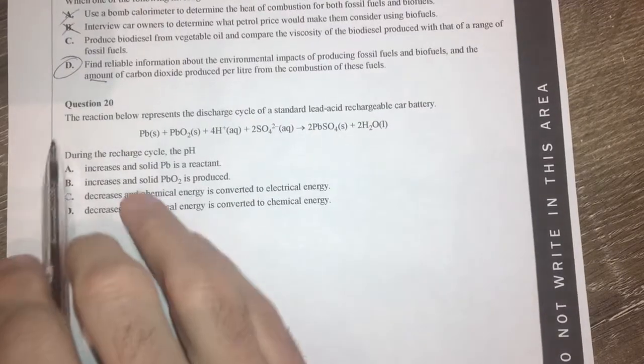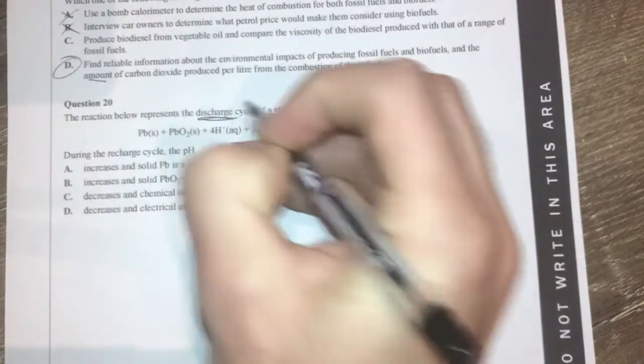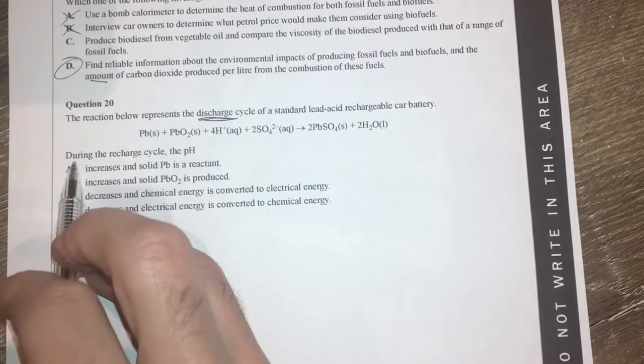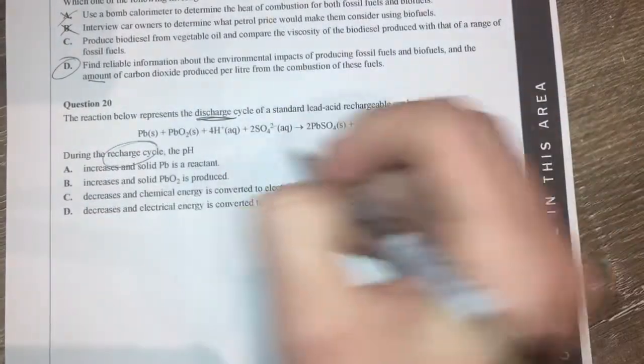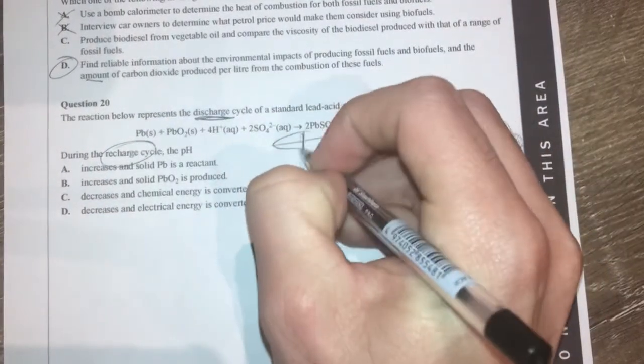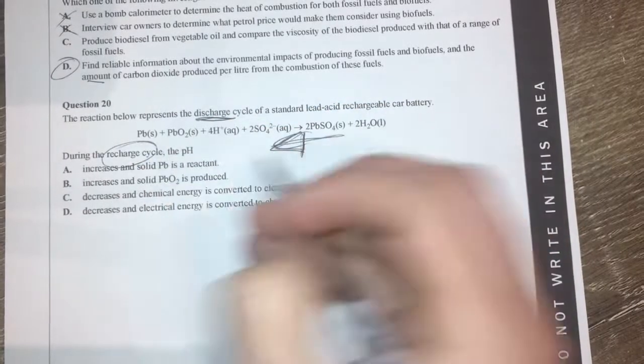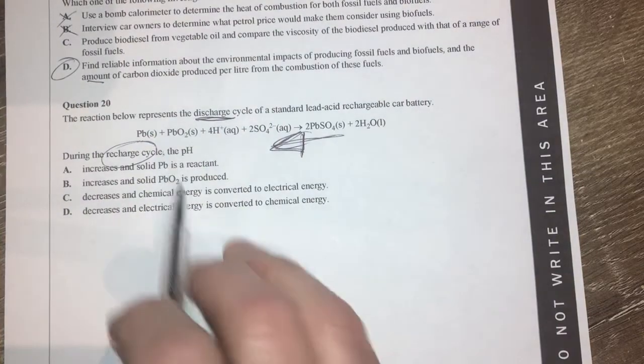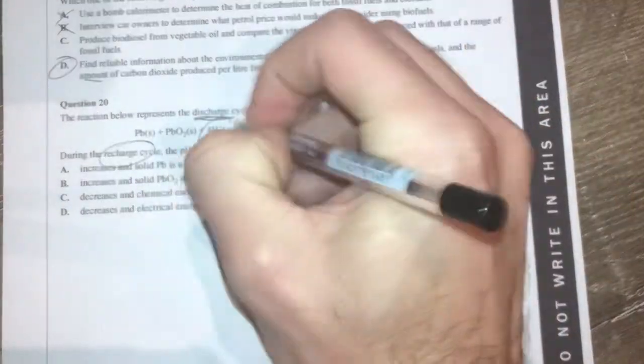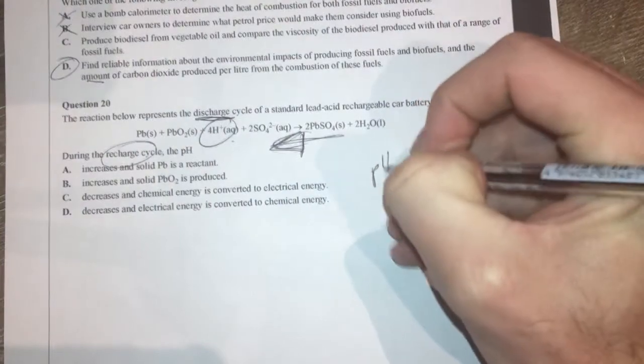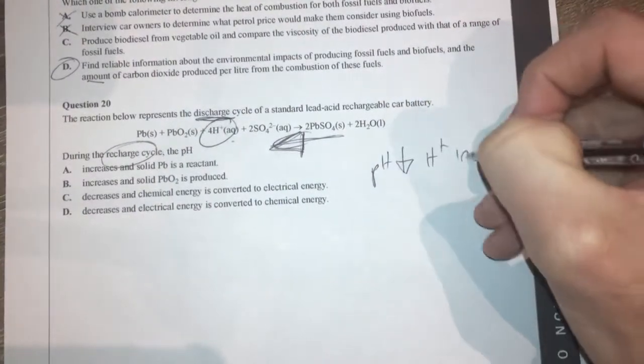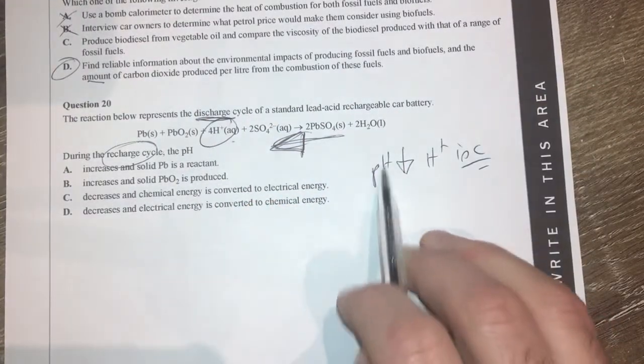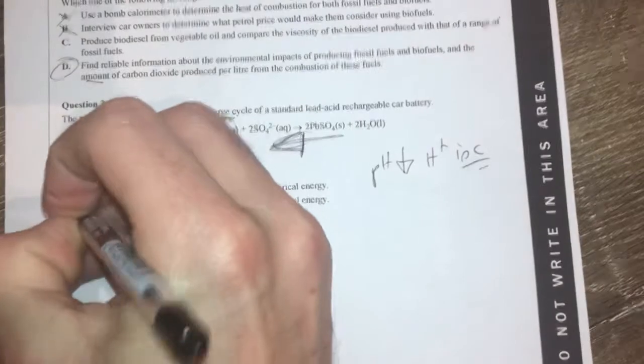Question 20. The reaction below represents a discharge cycle of a standard lead acid battery, the car battery, during the recharge cycle. So the recharge is going backwards for this because we know this one's a discharge. So again, recharge means going backwards. I'm going to write my arrow there. What's going to happen to pH? pH is all about that. So pH will decrease as H positive will increase. So as we're going backwards, we're going to make more of this hydrogen ion. So therefore pH is going to go down. So you can cross these two off straight away.